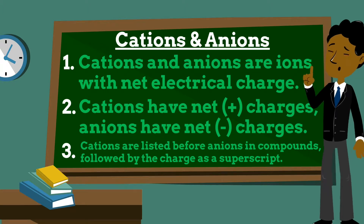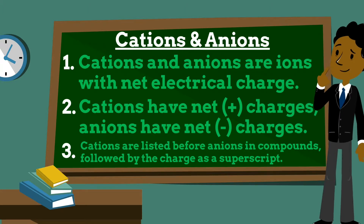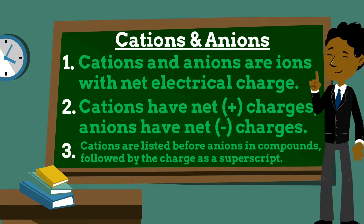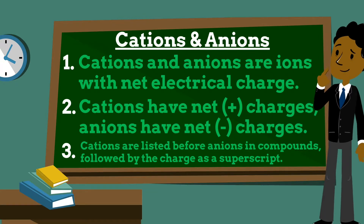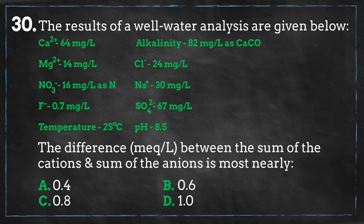For example, for sodium chloride, the sodium atom (Na) acts as the cation, while the chlorine atom (Cl) acts as the anion. When writing cation or anion symbols, the element symbols are listed first, then the charge is written as a superscript following the chemical formula.